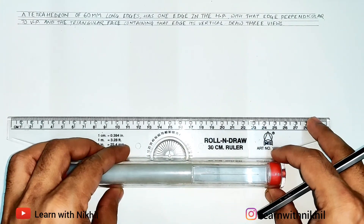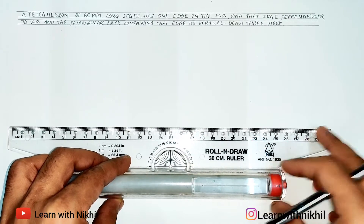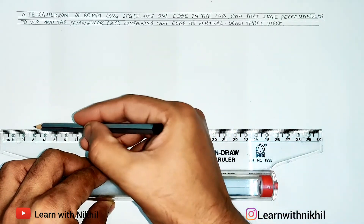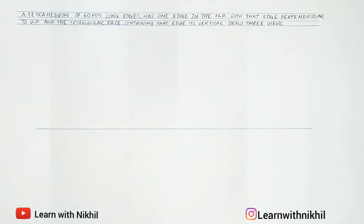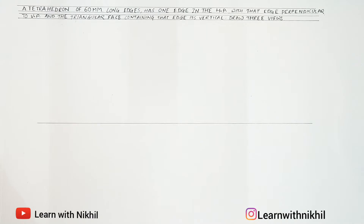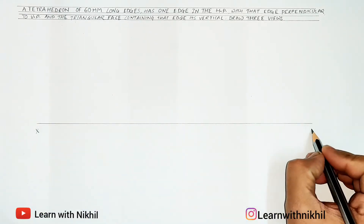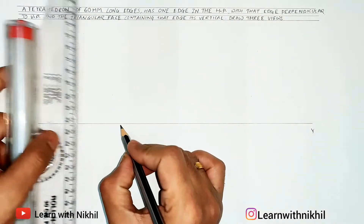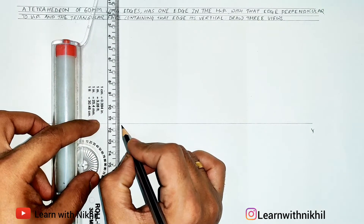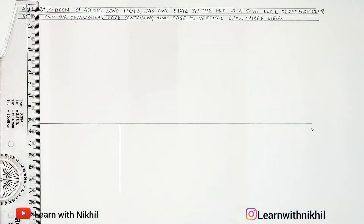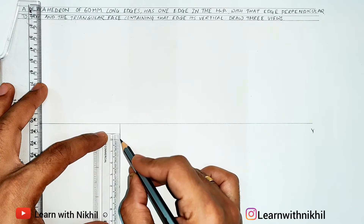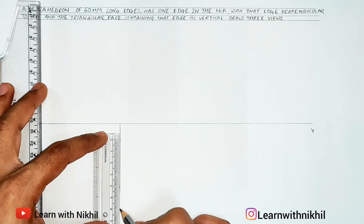To begin with the sum, first we will always draw a straight horizontal line. The upper side represents the vertical plane and the bottom side represents the horizontal plane. We will name this line X and Y. Now, to draw the top view, from a point we will draw a line — the side of the tetrahedron is 60 mm, so I will draw a dark line of 60 mm.